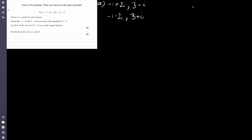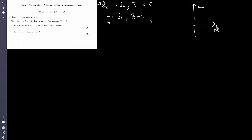Now we've just got to put them on the Argand diagram as asked. Mine is just going to be a sketch — make sure yours on your actual exam looks a lot nicer. So this is my real axis, and this is my imaginary axis. I'll call the points A, B, C, and D so I can label them. So A is minus 1 plus 2i — that's 1 unit back on the real axis and 2 units up on the imaginary axis, roughly around here.